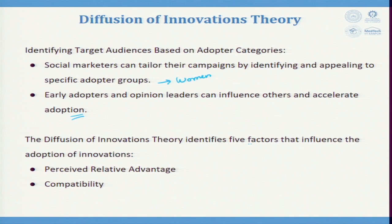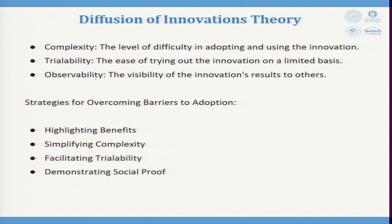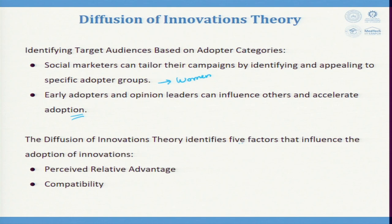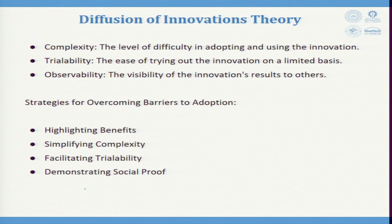The Diffusion of Innovation Theory also identifies five factors that influence the adoption of innovation: perceived relative advantage, compatibility, complexity, trialability, and observability.